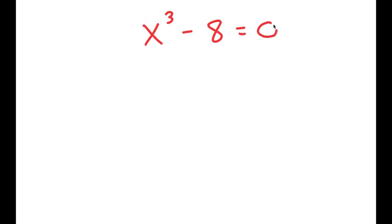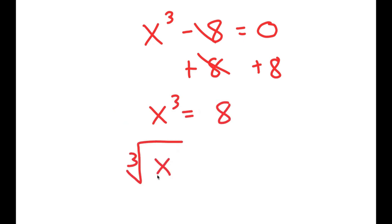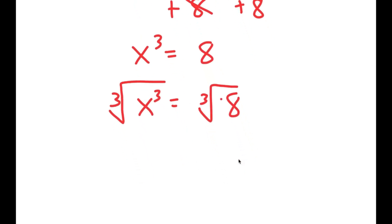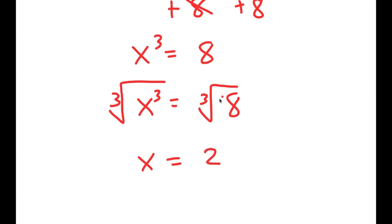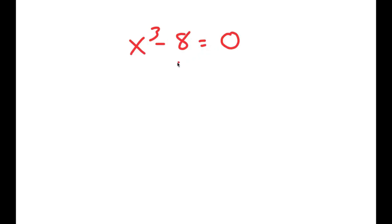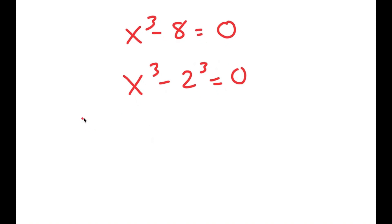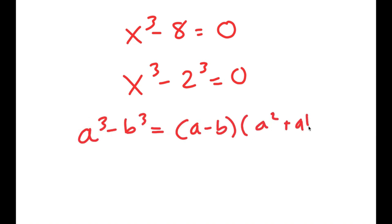Alright, so in this video I'm going to solve the equation x to the power of 3 minus 8 is equal to 0. How most people solve this equation is they add 8 on both sides to get x to the power of 3 is equal to 8, and then take the cube root on both sides. The cube root of x to the power of 3 is x, and the cube root of 8 is 2, so they get x equals 2 — which is a solution, but actually there are more than one solution. I'm going to rewrite 8 as 2 to the power of 3 and use the formula a to the power of 3 minus b to the power of 3 equals a minus b times a squared plus ab plus b squared.